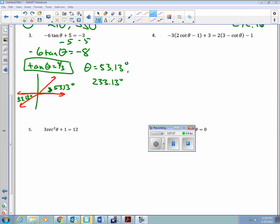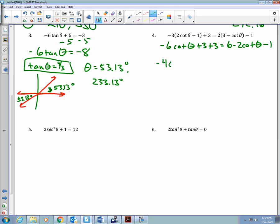What do you think of that? The next one looks really bad, doesn't it? It's really no big deal. Distribute. -6cot(θ) + 3 + 3 = 6 - 2cot(θ) - 1. What do you think I do? Combine like terms. So, I'm going to add the two cotangents over to the other side. And I'll get -4cot(θ). And 6 and 6 looks like I get a negative 1. Divide by negative 4, I get cot(θ) = 1/4. Oh, no. I don't have a cotangent button on my calculator. But I have a tangent button.